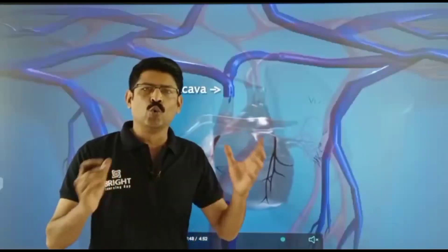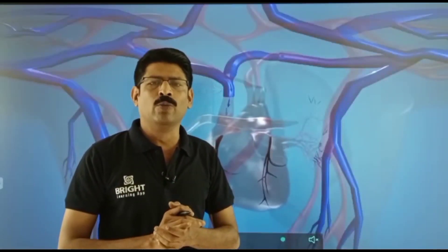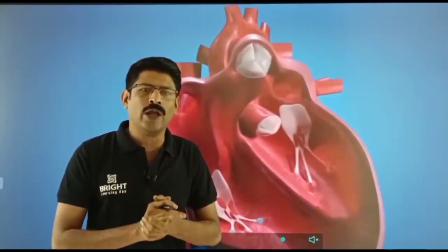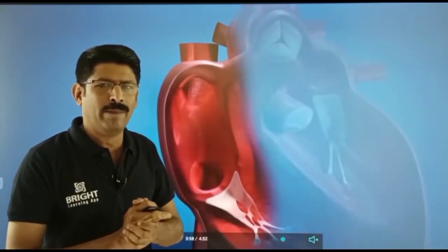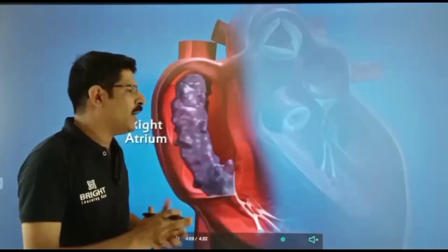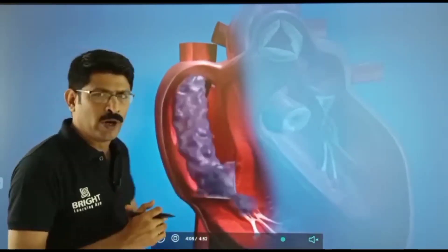This cycle continues throughout life. Each cardiac cycle completes in 0.8 seconds. The stroke volume is about 5 liters per minute - the heart pumps 72 times per minute, pumping about 5 liters of blood throughout the body.